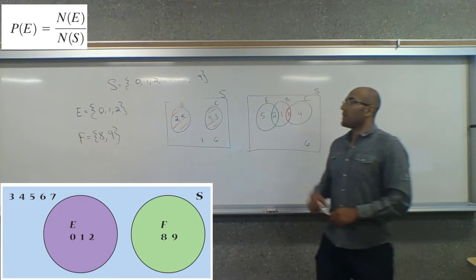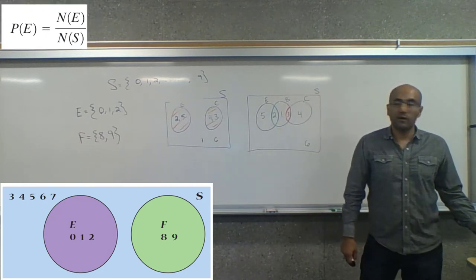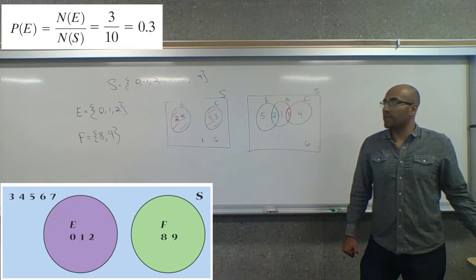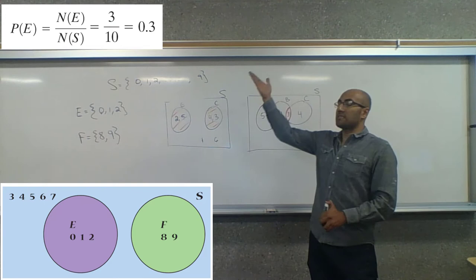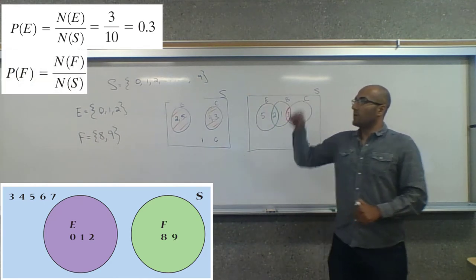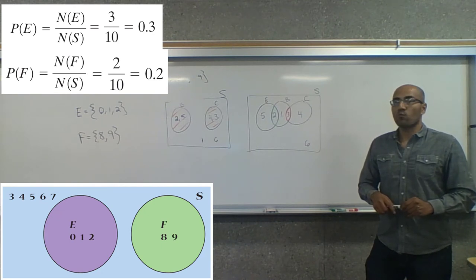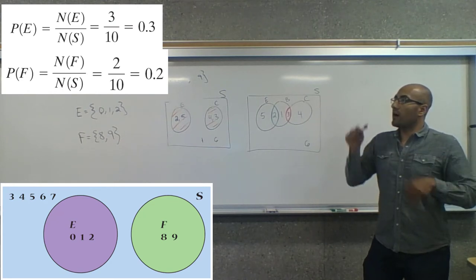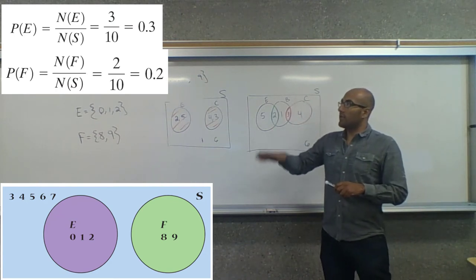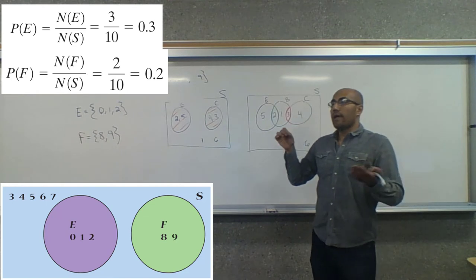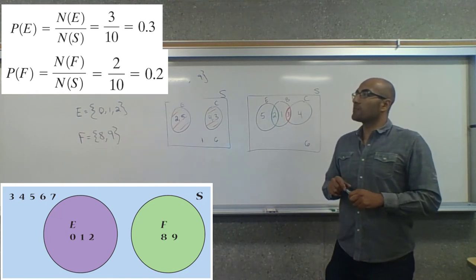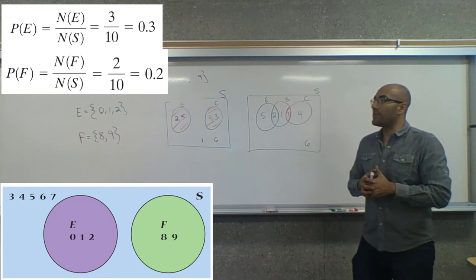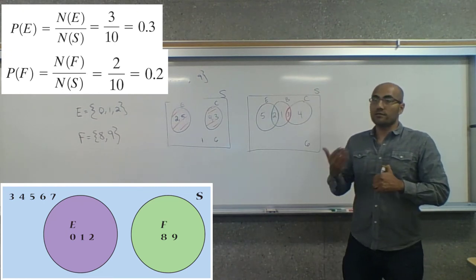What's the probability of E? The probability of E equals the number of things in E divided by the number of things in the sample space: 3 out of 10, or 30 percent. The probability of F equals 2 out of 10, or 20 percent. Now, what if I wanted to find the probability of E or F? Is it possible that both of us win at the same time? No, because there's nothing in the overlap — no numbers common to both wagers.